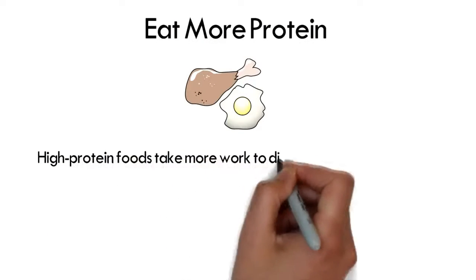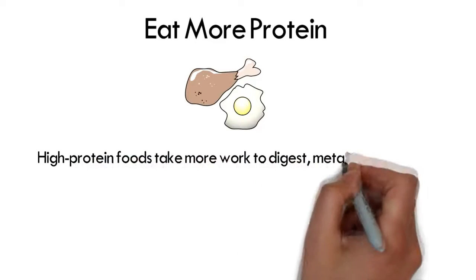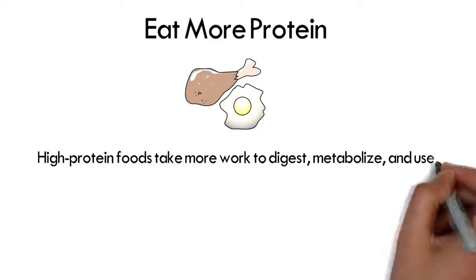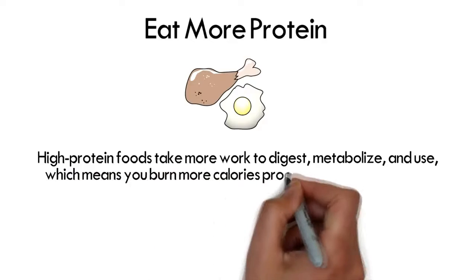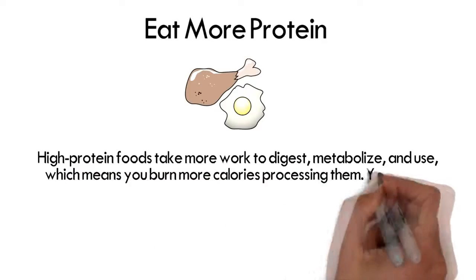Women doing resistance training should aim for between 0.54 and 1 gram per pound of body weight. If your target weight is 100 pounds, you would eat between 50 to 100 grams each day.